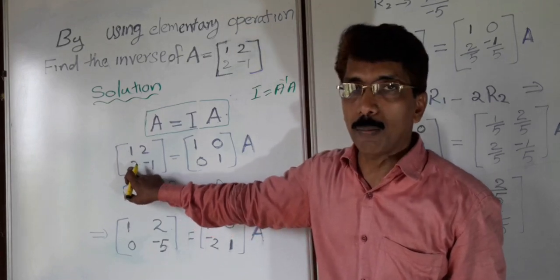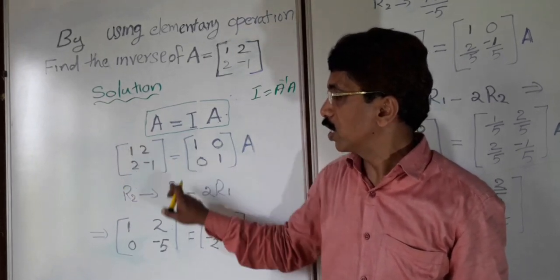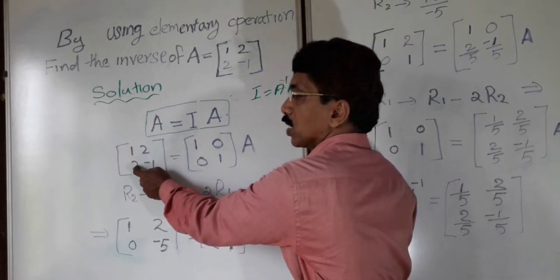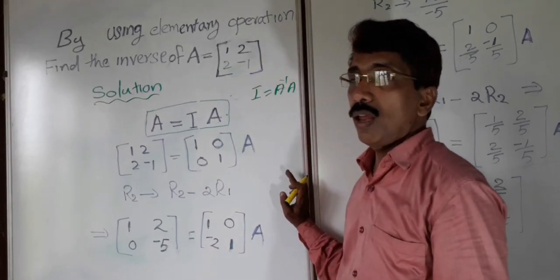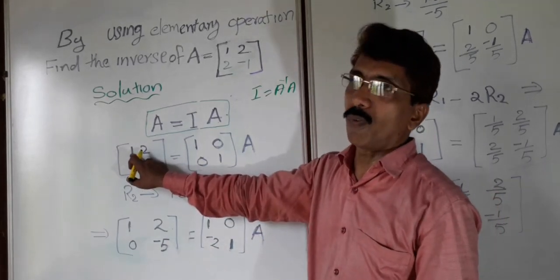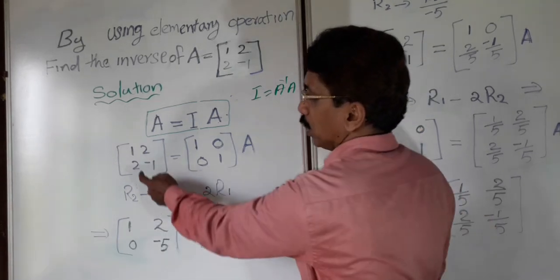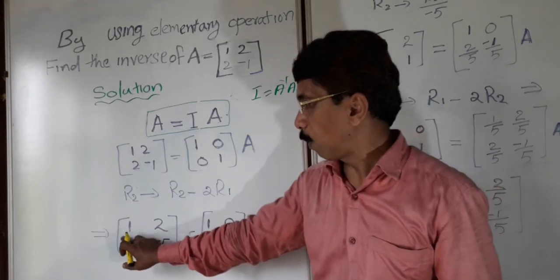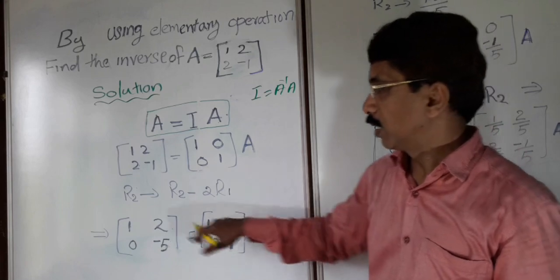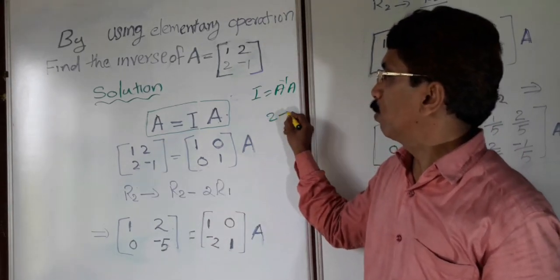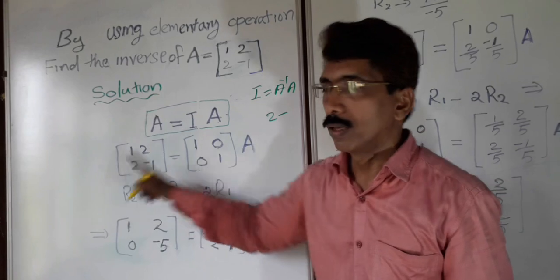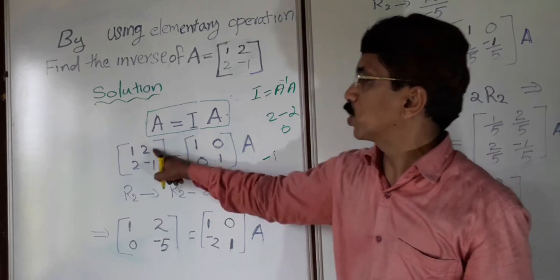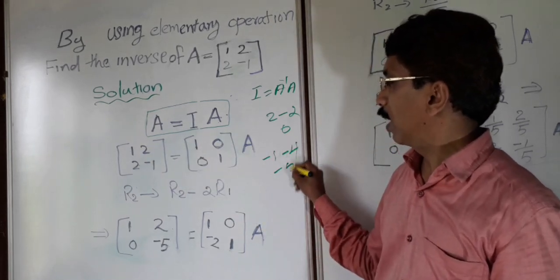This is an element from R2. R2 changes to R2 minus 2R1. To make 2 zero, 2 changes to 2 minus 2 into 1. You can subtract a multiple of another row from one row. So this 2 changes to 2 minus 2 into 1, which becomes 0. I am applying this for all elements of R2 completely. 2 minus 2 into 1 equals 0. Negative 1 changes to negative 1 minus 2 into 2 equals negative 5.